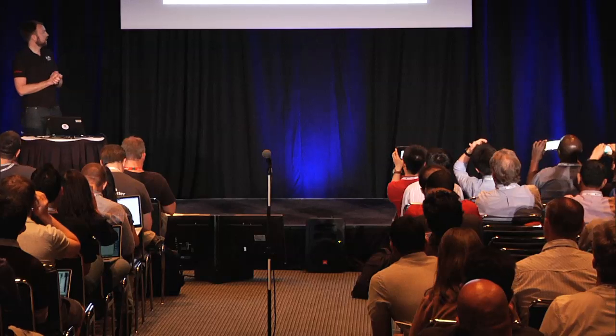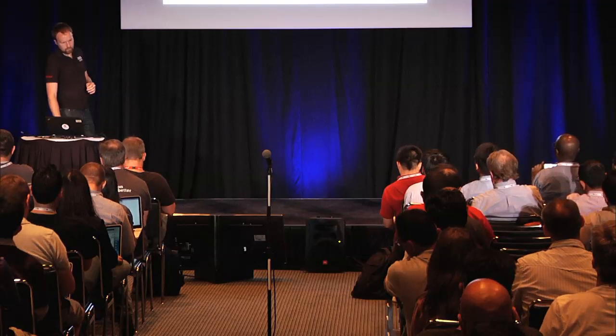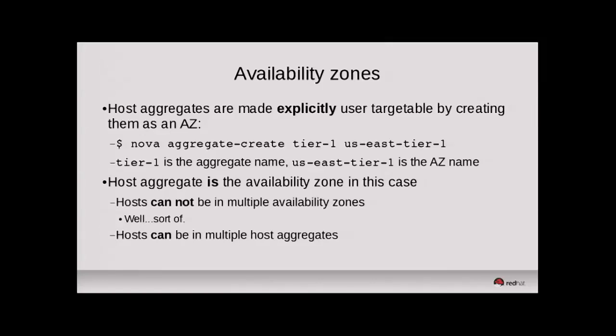This is where it gets a little confusing. Availability zones are a logical grouping of hosts based on some arbitrary factor — typically a failure domain — that you're exposing to the user. They are explicitly user-targetable, so the user can say they want their instance to run on that exact availability zone. Although Nova will choose one for you if the default is unset, or you can set a default so all requests go there. Interestingly, availability zones and host aggregates are actually the same thing — availability zones are effectively an extension of the host aggregates concept.